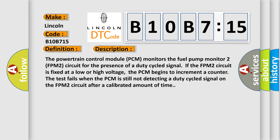The powertrain control module PCM monitors the fuel pump monitor 2 FPM2 circuit for the presence of a duty cycled signal. If the FPM2 circuit is fixed at a low or high voltage, the PCM begins to increment a counter.